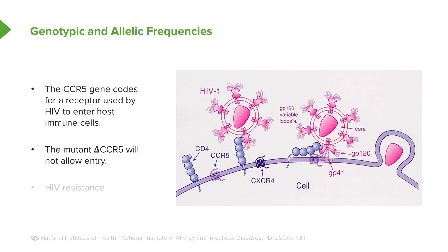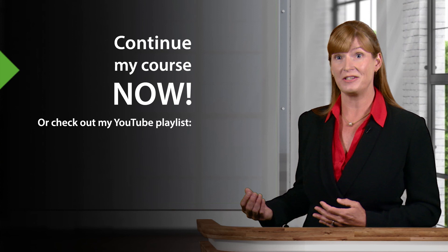In actuality, this mutation provides HIV resistance. HIV gets into the blood but cannot enter the cells, so it cannot take over or destroy the immune system. This mutation is thought to have originated somewhere in northern Europe, possibly selected for by a plague that used similar cell-entry mechanisms. It therefore has a higher prevalence in northern Europe, and we'll look at how gene flow has spread it later in the lecture.